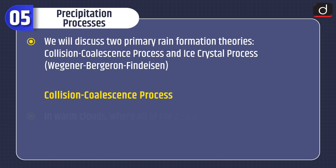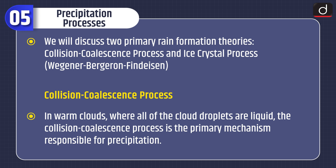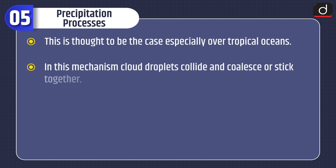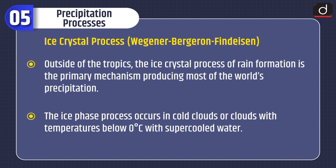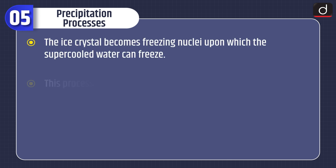Now let's look at precipitation processes. We will discuss two primary rain formation theories: the collision coalescence process and the ice crystal process. In warm clouds where all cloud droplets are liquid, the collision coalescence process is the primary mechanism; cloud droplets collide and coalesce or stick together, and a wide distribution of droplet sizes is needed. Outside the tropics, the ice crystal process is the primary mechanism producing most of the world's precipitation; it occurs in cold clouds below zero degrees Celsius with supercooled water, where ice crystals become freezing nuclei — this process also creates snow.